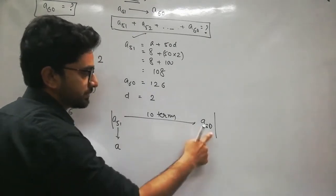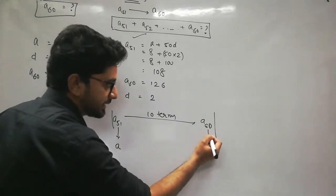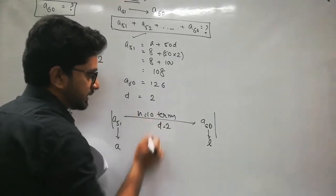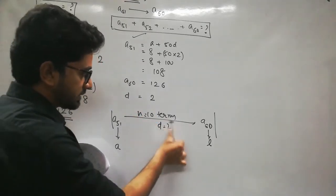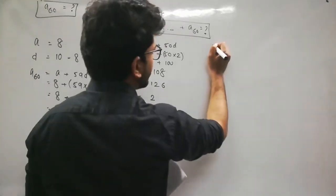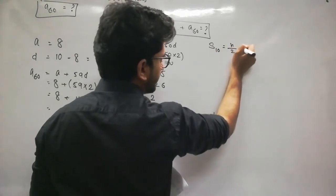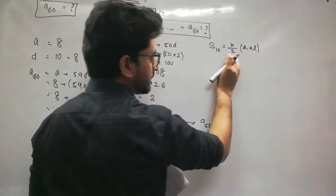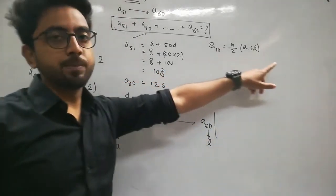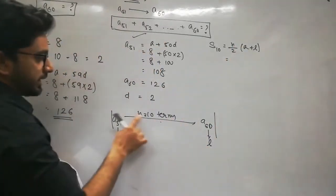So A51 is the first term and A60 is the last term of these last 10 terms. The common difference and n value — n is 10. We use the formula: Sum = n/2 × (a + l), first term plus last term.